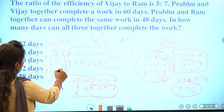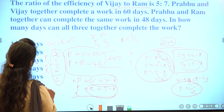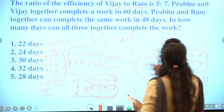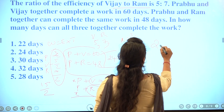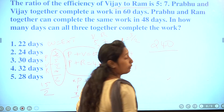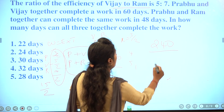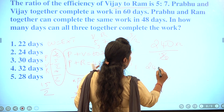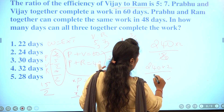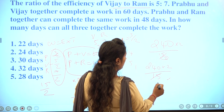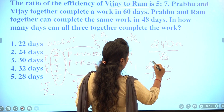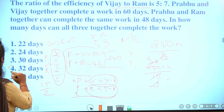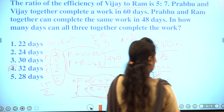Total work is 240, and combined efficiency is 15 by 2. Days to complete equals 240 into 2 divided by 15, which gives 32 days. The answer is 32.